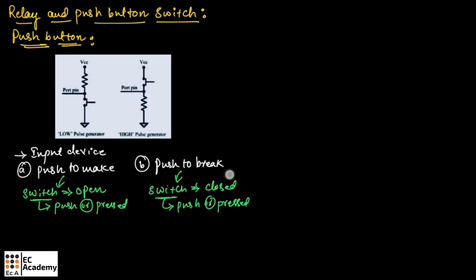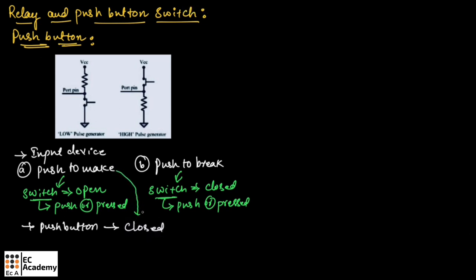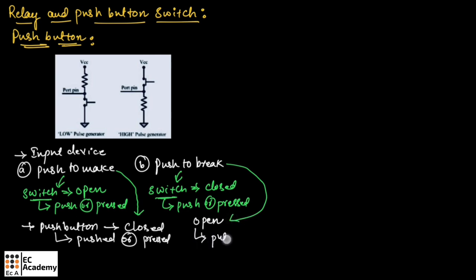In push to break configuration, the switch is normally closed and it will break or open the circuit when the switch is pushed or pressed. This push button will stay closed for push to make configuration as long as it is pushed or pressed, and will remain open for push to break configuration as long as it is pushed or pressed. Push button is normally used for generating a momentary pulse.